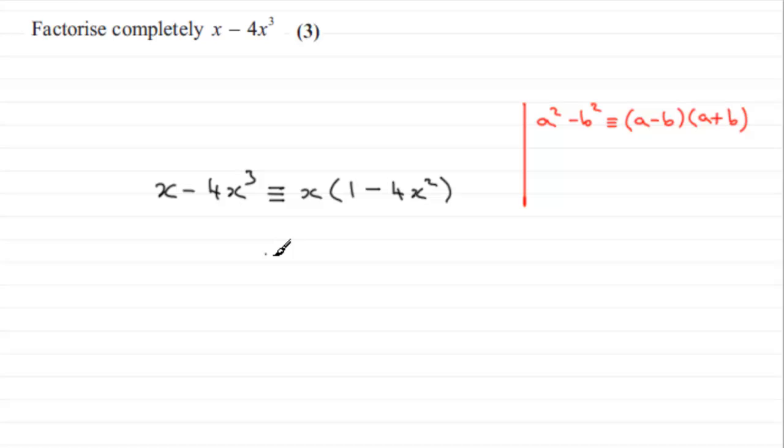So what we can do with this is say that this is identical to that x. And this is the result of squaring 1, so it's 1 minus, and this is the result of squaring 2x. So it's 1 minus 2x multiplied by 1 plus 2x.